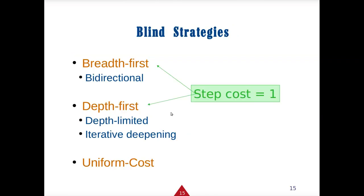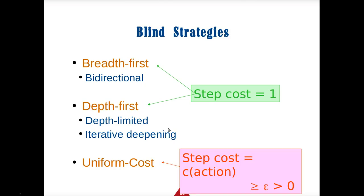For the base cases, the cost of each step is one. For the uniform cost strategy, we have a cost function that we calculate.